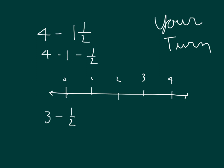And so we know we're talking about halves. Our answer is going to be between 2 and 3. So our answer is 2 and 1 half, where we would draw our arrow back from 4 to 3, and then back another half to get to 2 and 1 half.